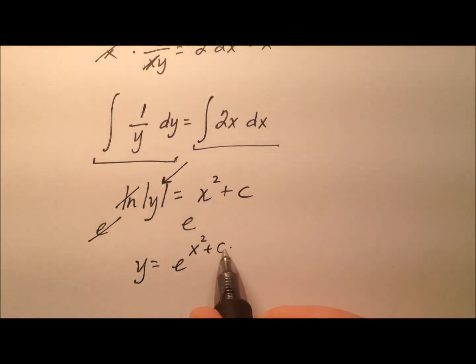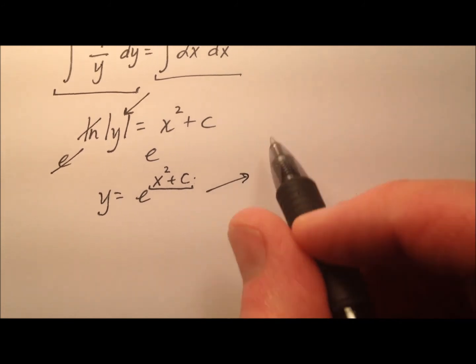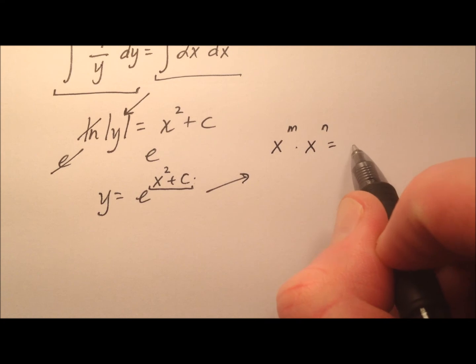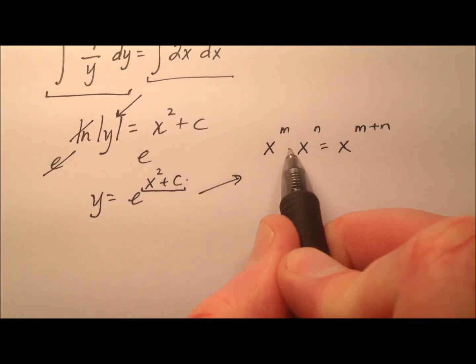Well, I want to show you a little trick you can do here with this plus c, since this whole thing is the exponent of e. I have a little property here that says x to the m times x to the n equals x to the m plus n. Because remember, when you're multiplying like bases, you add their exponents, which means you can go backwards as well and kind of decompose a little bit.